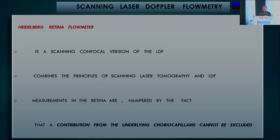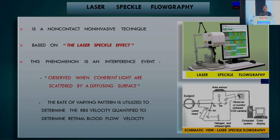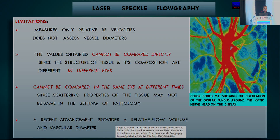Scanning laser Doppler flowmetry is a scanning confocal version combining laser scanning tomography and laser Doppler flowmetry principles, though the contribution from underlying choroidal properties cannot be excluded. Laser speckle flowgraphy is a non-contact, non-invasive technique based on the laser speckle effect—a phenomenon of interference when coherent light is scattered by a diffusing surface—and the rate of varying pattern is used to determine retinal blood cell velocity. Limitations include: it measures only relative blood flow, does not assess vessel diameter, values cannot be compared directly between eyes or the same eye at different times due to differing tissue scattering properties.